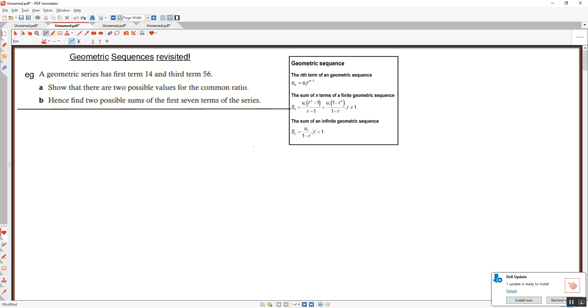If you go on to files, formula booklets, this is the formula booklet that you need. So it is a good idea, especially with these sequence questions, to keep this on hand. We're going to look at this particular question. A geometric sequence has first term 14 and third term 56.